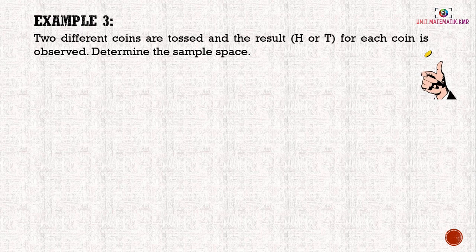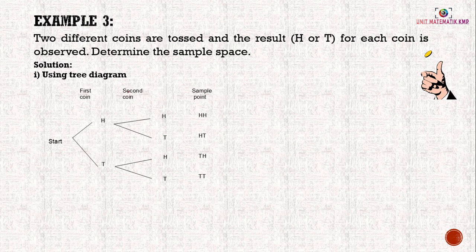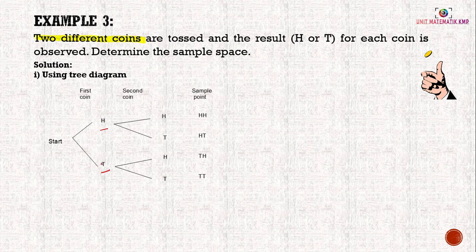Example 3: two different coins are tossed and the result H or T for each coin is observed. We want to determine the sample space. Using a tree diagram: the first coin can give head or tail. At the end of each branch we write the outcomes. For the second coin, we also have head or tail. At the end of the branches are the sample points.